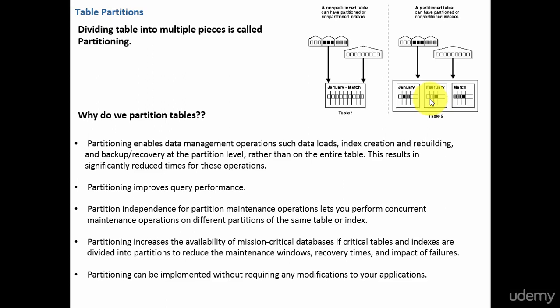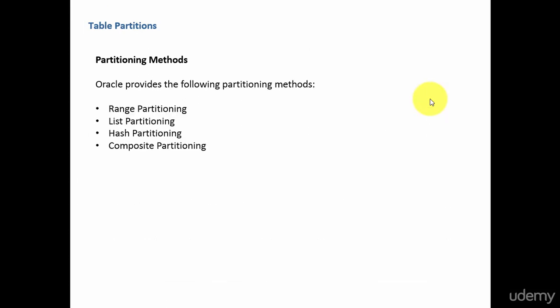Because of all these advantages, partitioning became a really cool concept in the database world. So, what are the different kinds of partition methods we have? We have range partitioning, list partitioning, hash partitioning, and composite partitioning. We will be discussing each one of these partitioning types in the coming sessions.